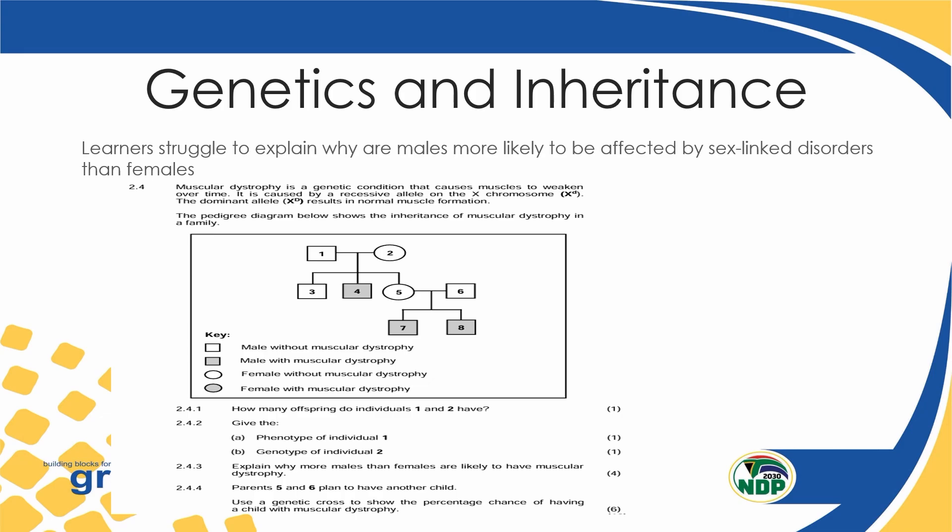Could I explain why more males than females are more likely to have muscular dystrophy? Looking at this diagram, out of about five or six males, three of them are affected, while all the females are not affected. The question is asking why males are more affected than females. Remember, this is a sex-linked inheritance, and all sex-linked conditions are inherited on an X chromosome. Males only have one X chromosome and do not have a second X chromosome to counter the effect of the recessive allele.